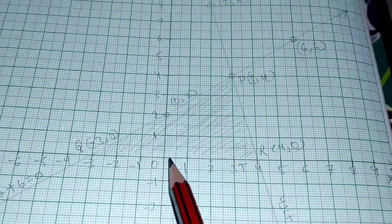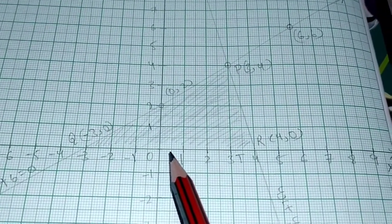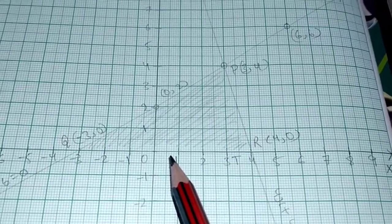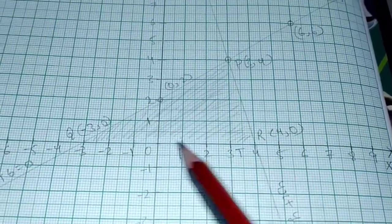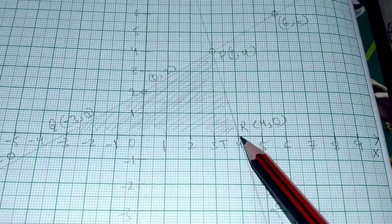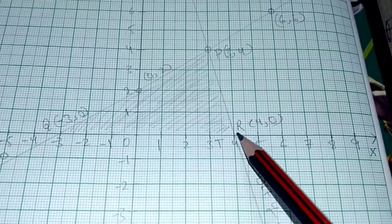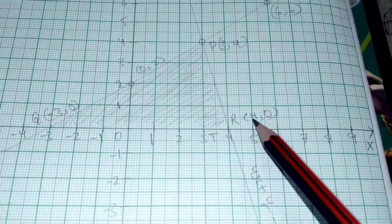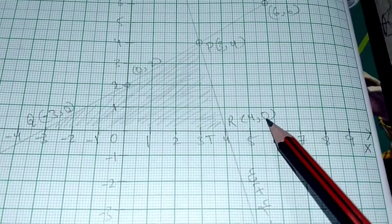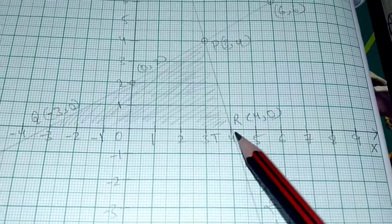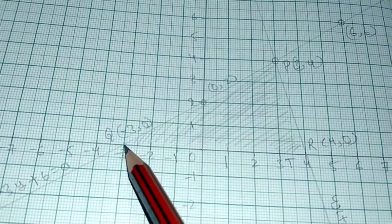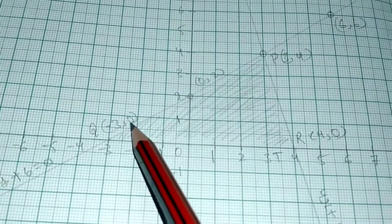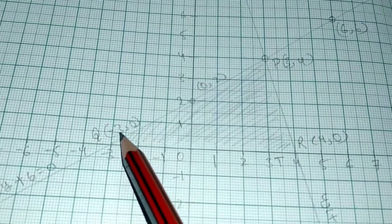Looking at the vertices of the triangle: This line crosses the x-axis at the point where x is 4 and y is 0. The other line crosses the x-axis where x is minus 3 and y is 0.